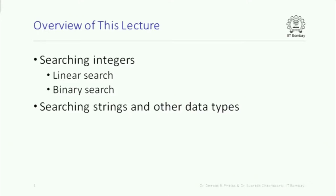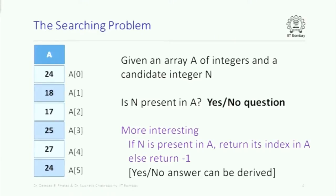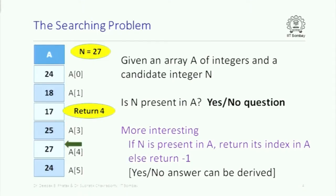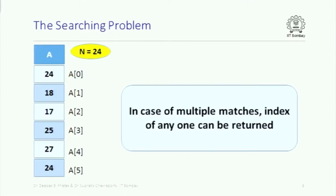Now we look at the searching problem. You are given an array of integers and a particular integer n, and you ask: is n present in the array? If n is present, return its index; otherwise return -1. For example, if n is 27 and a[4] is 27, return 4. If n is 23 and 23 is not in the array, return -1. If n is 24 and there are two 24s, you can return either one of the matching indices.